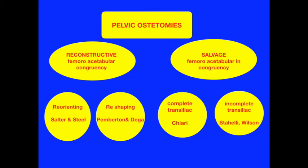Osteotomy is also divided into reconstructive and salvage. Reconstructive means there is spherical acetabular congruency; these are divided into reorienting, like Salter and Steele, and reshaping, like Pemberton and Dega. Salvage involves femoroacetabular incongruency, like Chiari, Steele, and Wilson, which includes complete or incomplete transiliac types.